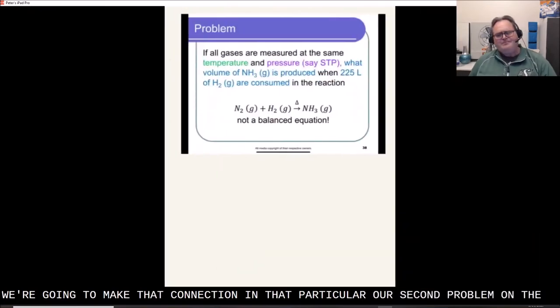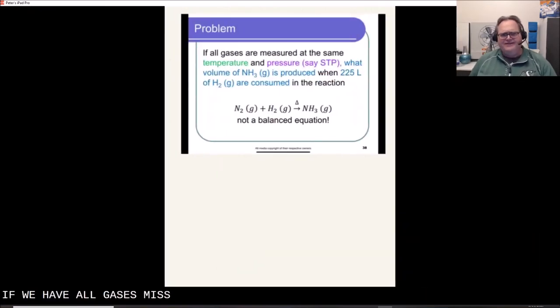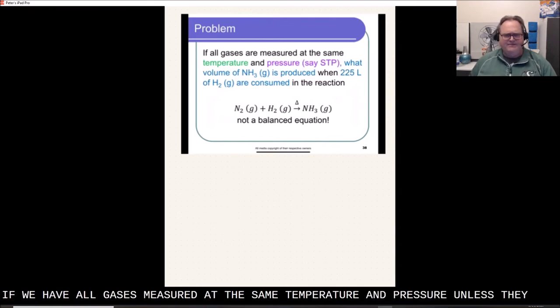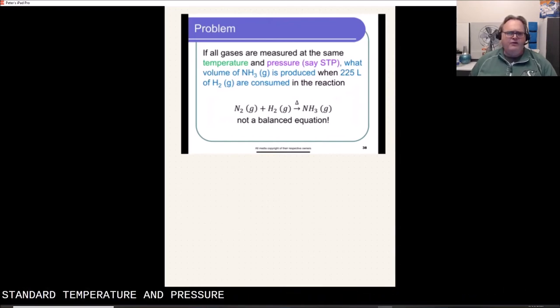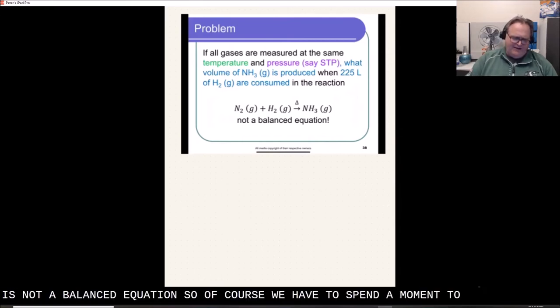Our second problem on there, if we have all gases measured at the same temperature and pressure, let's say standard temperature and pressure, what volume of ammonia gas is produced when 225 liters of H2 are consumed in the reaction? First thing is, we've got an equation here. It's not a balanced equation. So, of course, we have to spend a moment to balance that.